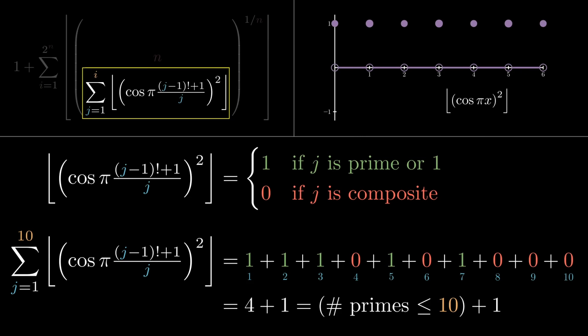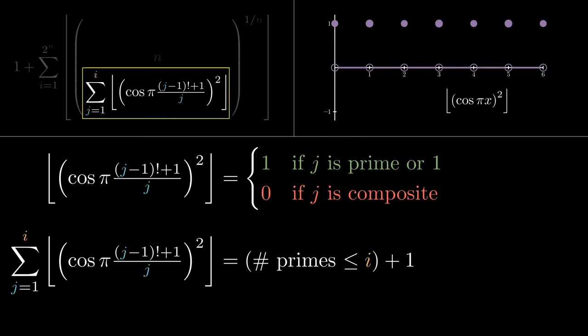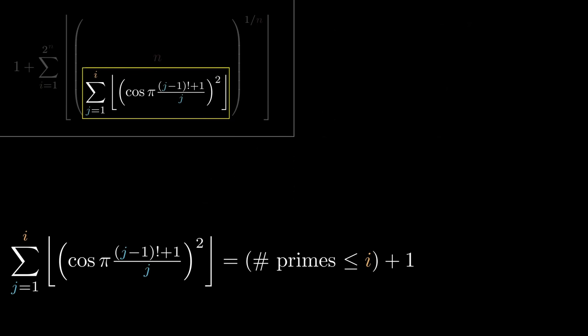In general, if we sum up to i, we'll get the number of primes up through i plus 1. So this whole complicated denominator has a very straightforward interpretation. It just counts primes. But wait, why are we counting primes? Willans' formula is supposed to compute the nth prime. We just determined that there are 4 primes up through 10, but we want to determine the fourth prime.